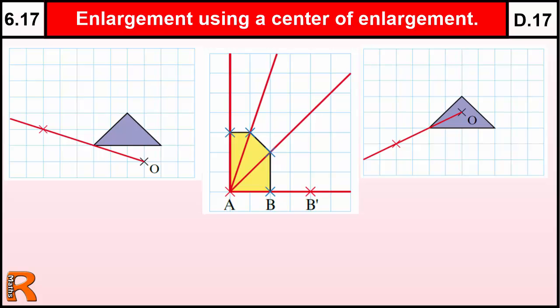So enlarging a shape, you should be able to make a shape so many times bigger. If I ask you to enlarge this shape scale factor 2, or make it twice as big, you should be able to change all the sides so they're twice as big. But when we use a centre of enlargement — in this case this cross here is denoting the centre — it's very specific to where the triangle needs to be drawn.